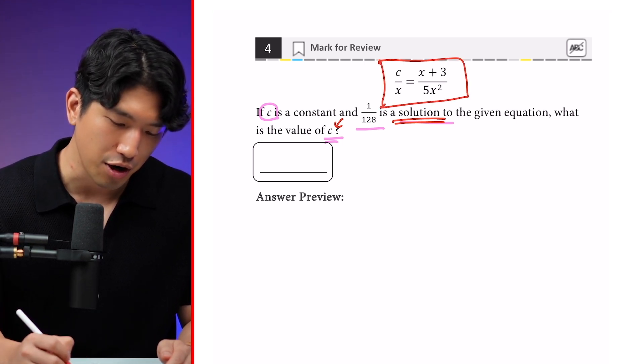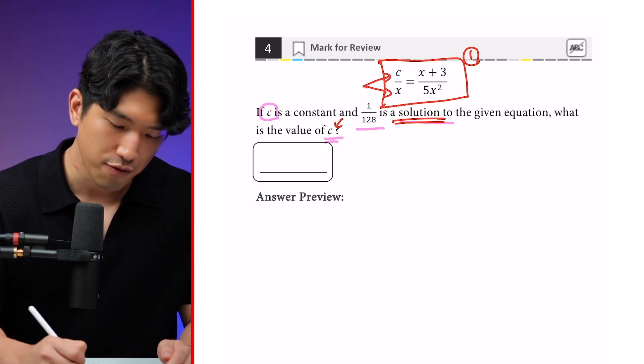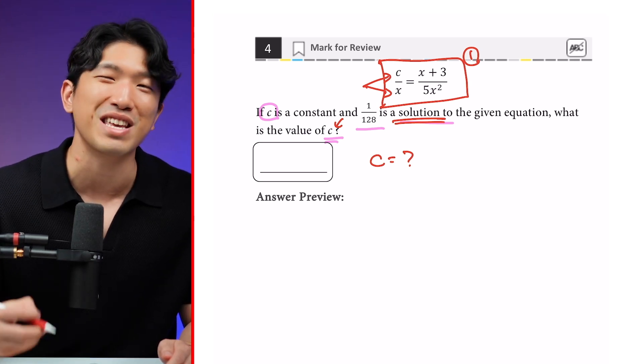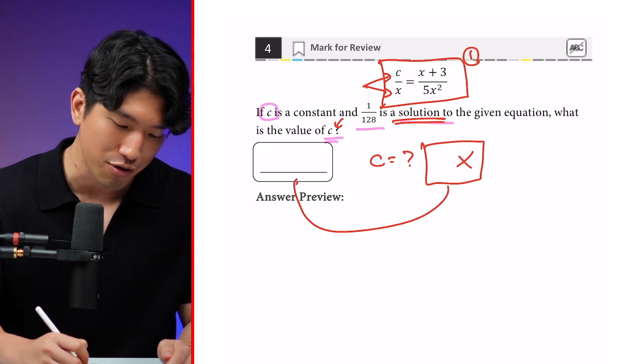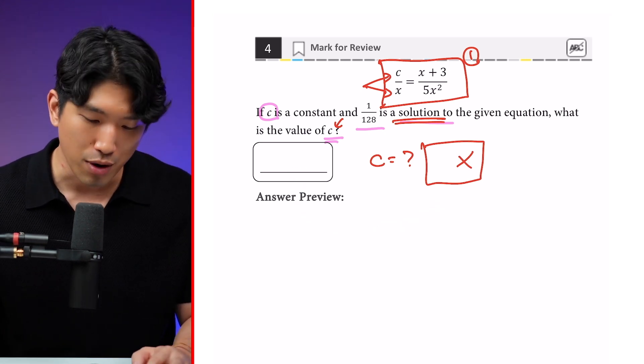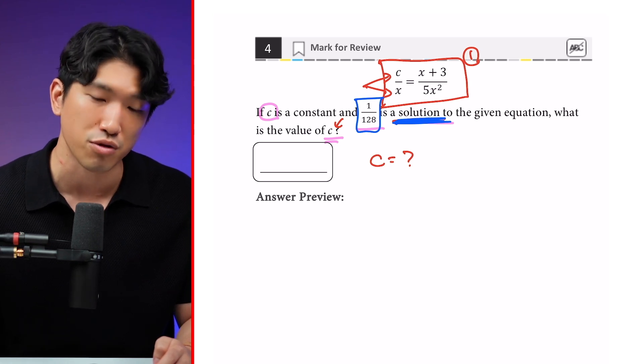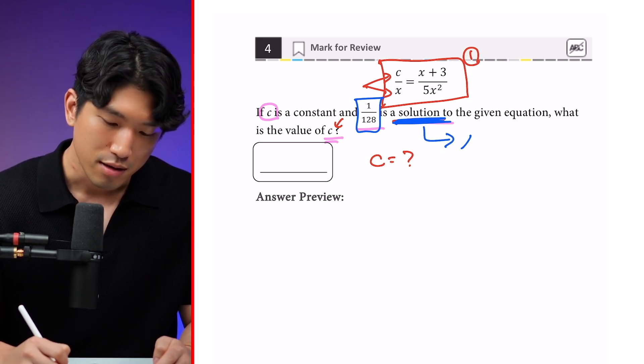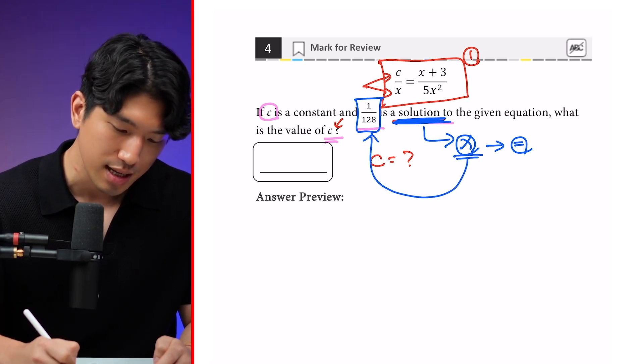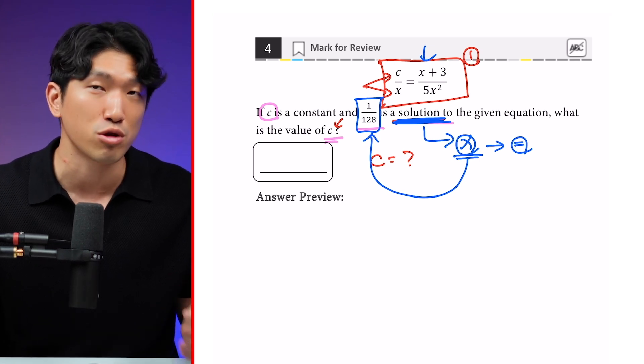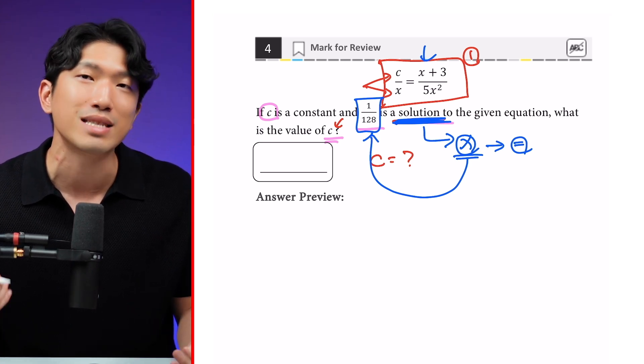So let's look at this equation right here. We have one equation and two unknown variables, c and x. And to find out what c is equal to, we have to get rid of all the x's in the equation. Otherwise, our final answer is going to have an x in it. So how are we going to get rid of all the x's? Well, the question tells us that 1/128 is a solution to the equation. Solution is the value of x that makes our equation true. Which means when x is equal to 1/128 in this equation right here, that means the equation is going to be true.